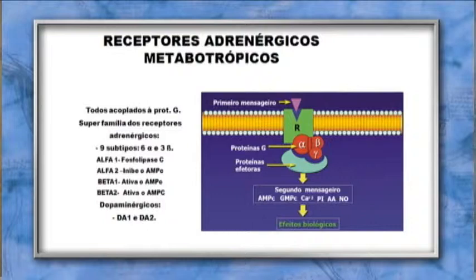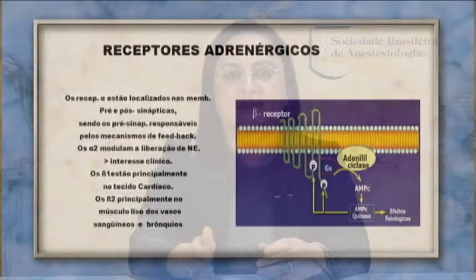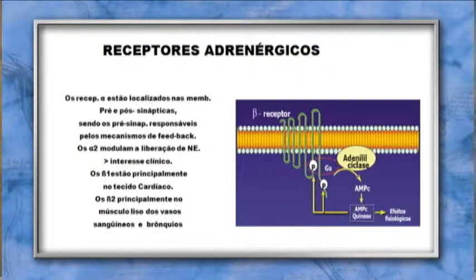Os receptores adrenérgicos são metabotrópicos, acoplados à proteína G, com nove subtipos — seis alfa e três beta — e diferentes segundos mensageiros. Alfa-1 está ligado à fosfolipase C; alfa-2 inibe o AMPc; beta-1 e beta-2 ativam o AMPc; e os dopaminérgicos D1 e D2. Esses receptores estão nas membranas pré- e pós-sinápticas, sendo os pré-sinápticos responsáveis pelos mecanismos de feedback. Os alfa-2 modulam a liberação de norepinefrina e têm grande interesse clínico. Os beta-1 estão principalmente no tecido cardíaco (80%), e os beta-2 no músculo liso dos vasos sanguíneos e brônquios (80% no pulmão).